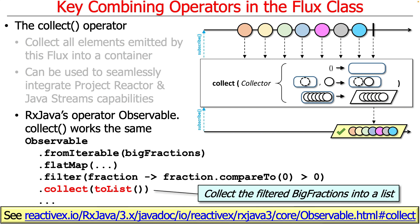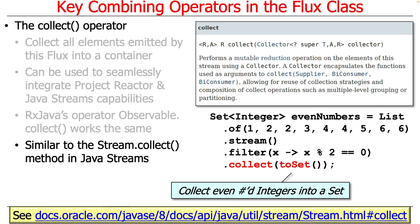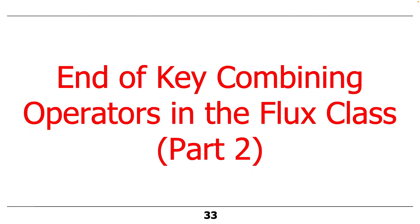RxJava has a collect method that works in exactly the same way for the same purpose, and Java Streams has a collect method that works very similarly. This example demonstrates how you can use other collector factory methods to collect into things other than lists — here we're collecting into a set, which will only collect even numbers, and they'll be unique. So that's the end of our discussion of combining operators: collect, reduce, and collect list are some important operators. I use them a lot, especially collect list, which turns out to be extremely useful in Project Reactor.